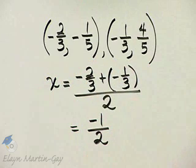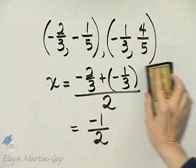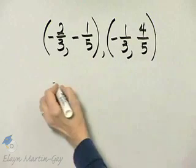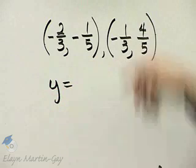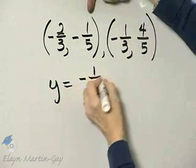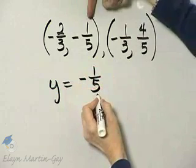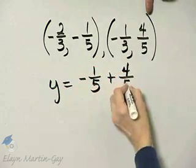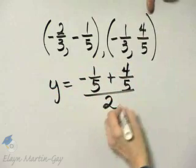So keep that in mind, that's the x value, and let's calculate the y value. The y value is the average of the y values of the endpoints. How do you find the average? You take this y value, add to it this y value, and divide by 2.